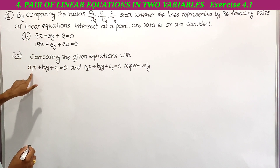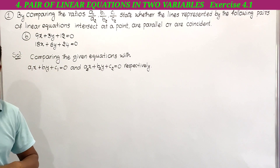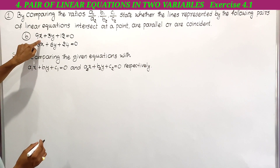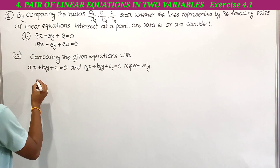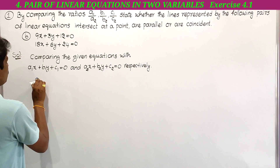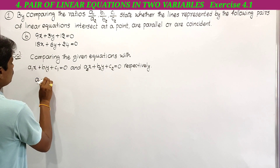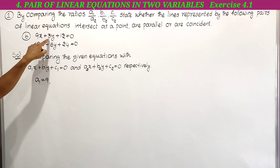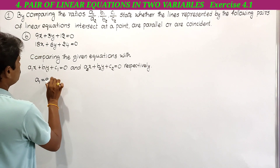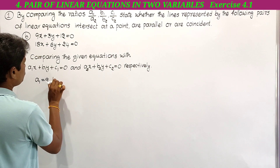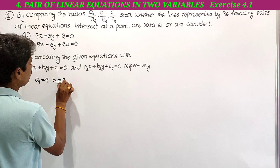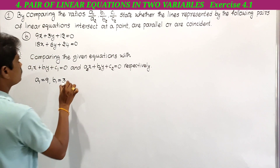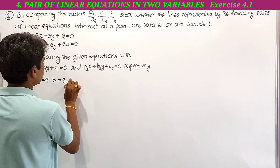Comparing the first equation with a1x plus b1y plus c1 equal to 0. Here a1 is the x coefficient; the x coefficient is 9, therefore a1 becomes 9. Here b1 is the y coefficient; the y coefficient is 3, so b1 is equal to 3. Here c1 is the constant; the constant is 12, so c1 is equal to 12.